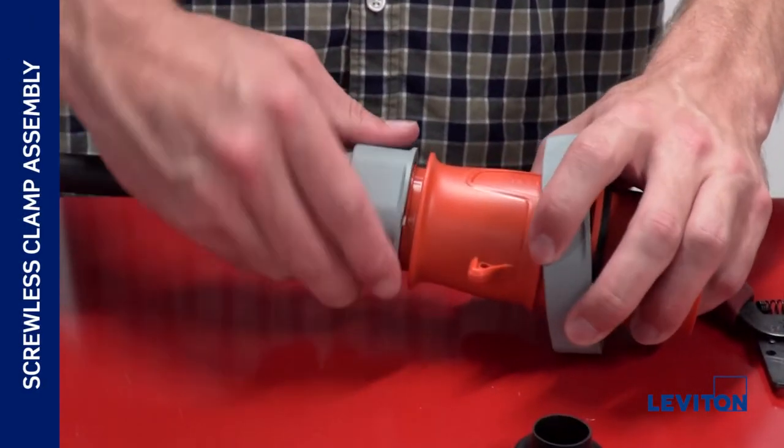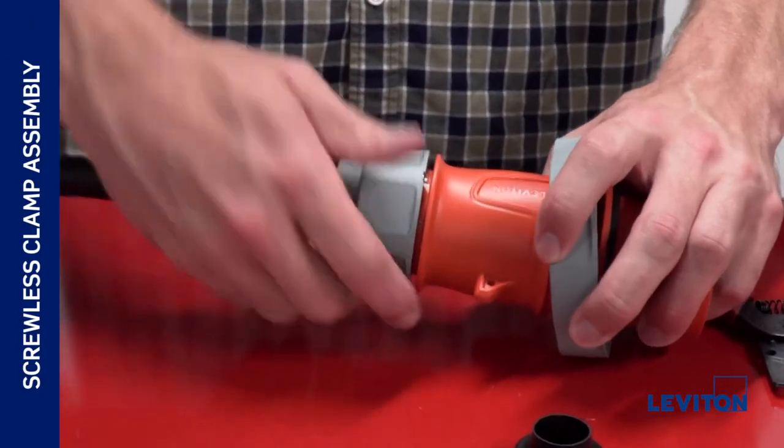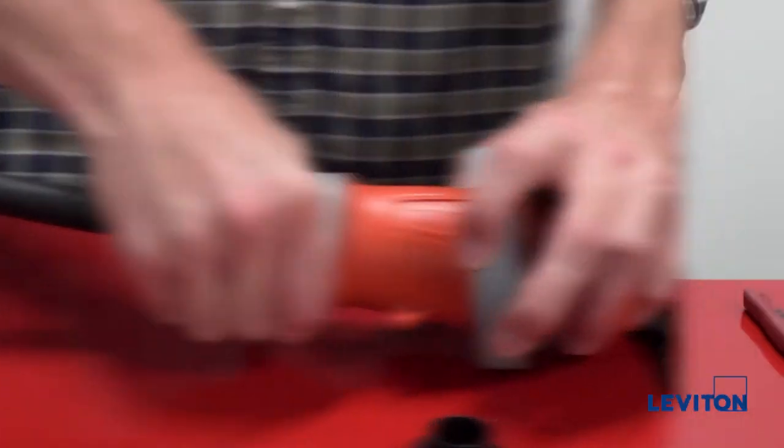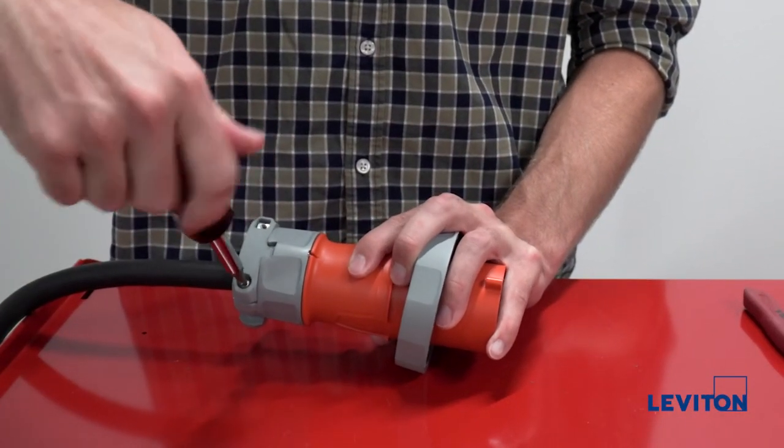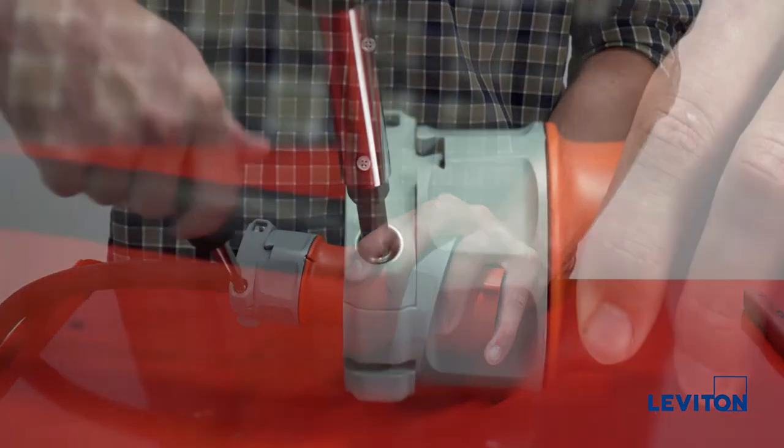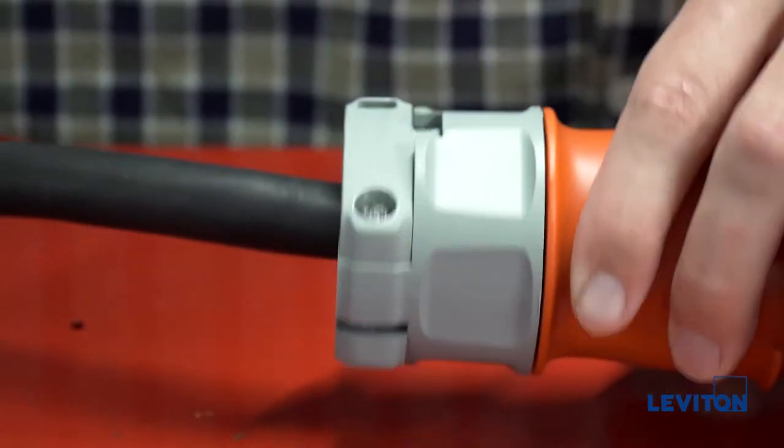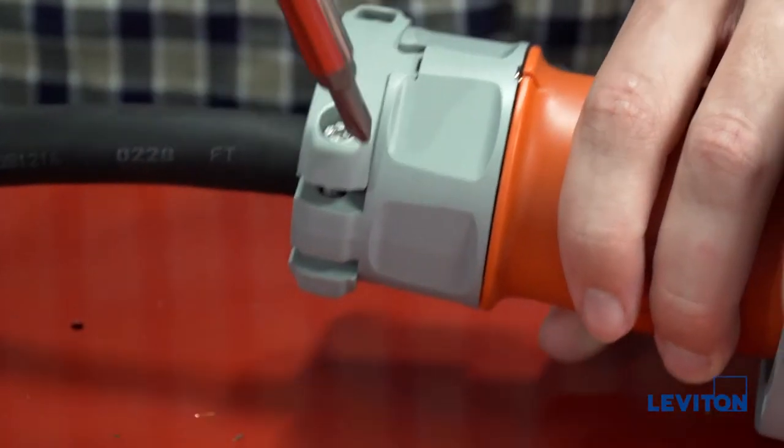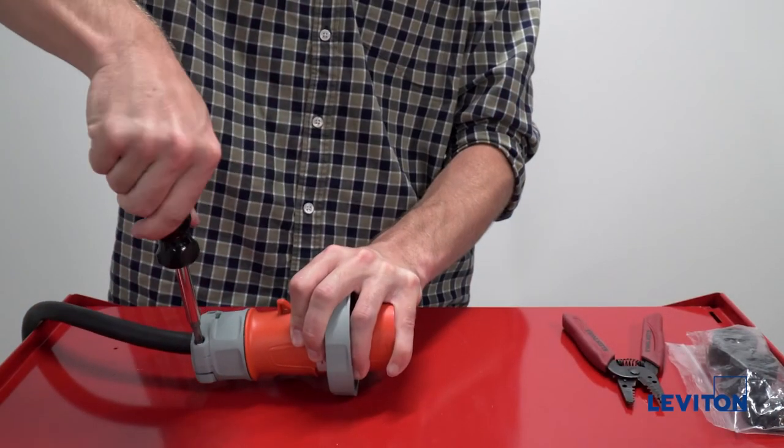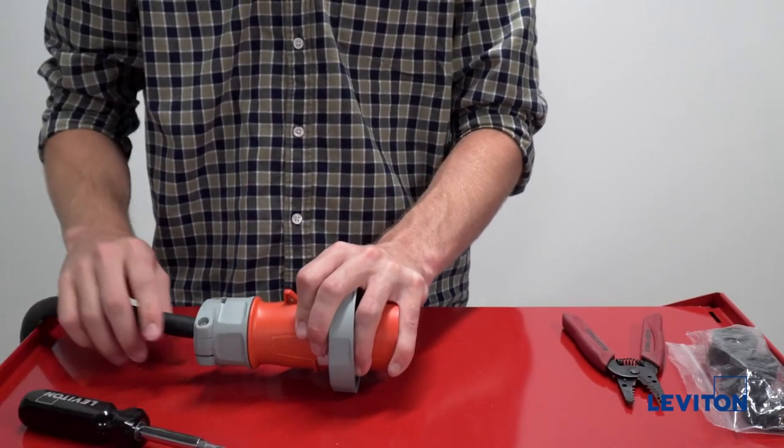If you are installing a device with a screwless clamp assembly, your installation is now complete. If you are installing a device with a standard saddle clamp assembly, use your screwdriver to tighten the clamp screws to 10 inch pounds. Again, do not over torque. The installation of your plug or connector is now complete.